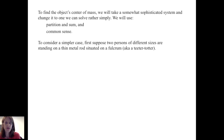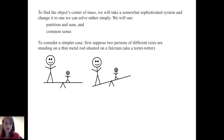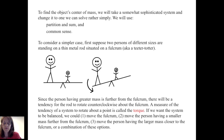First, suppose two persons of different sizes are standing on a thin metal rod situated on a fulcrum, also known as a teeter-totter. Here we have a large person standing further from the fulcrum and a smaller person standing close to the fulcrum, which will result in a turning — in this case, counterclockwise — where the larger person causes the teeter-totter to tilt downward. Since the person with greater mass is further from the fulcrum, there will be a tendency for the rod to rotate counterclockwise.